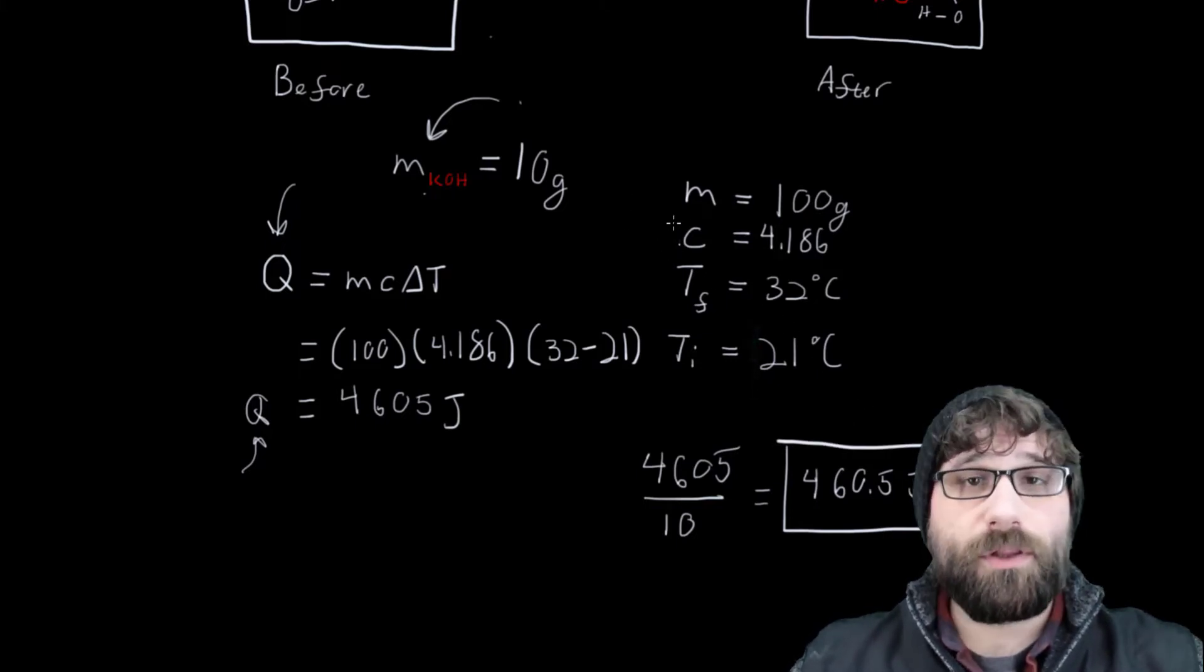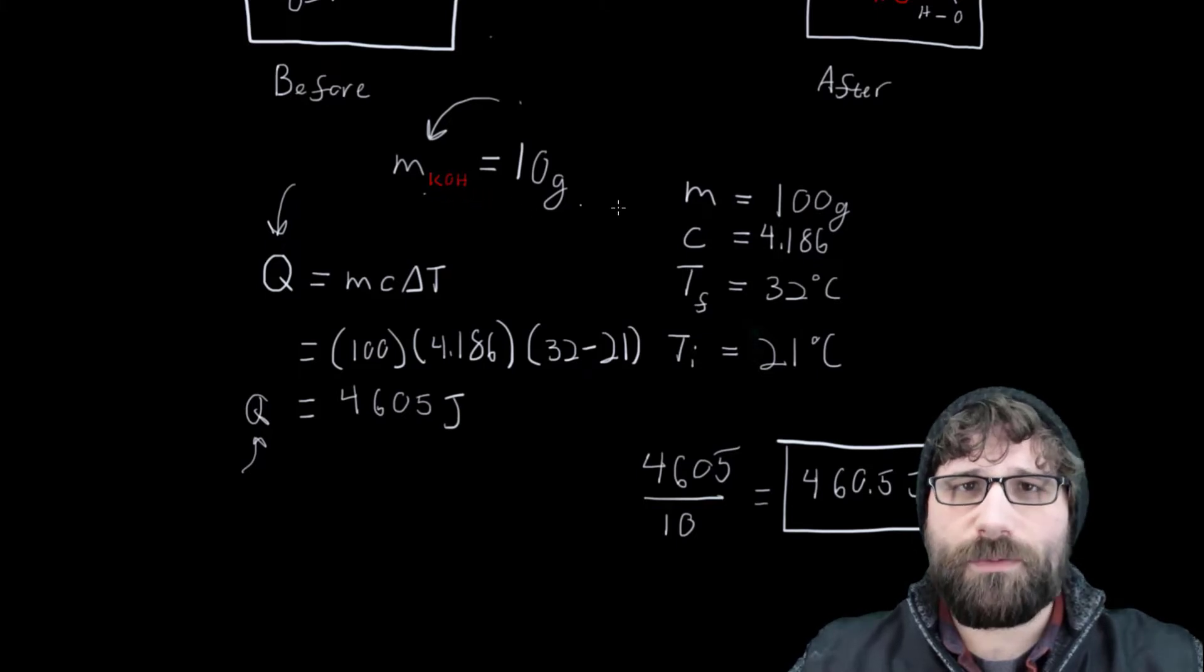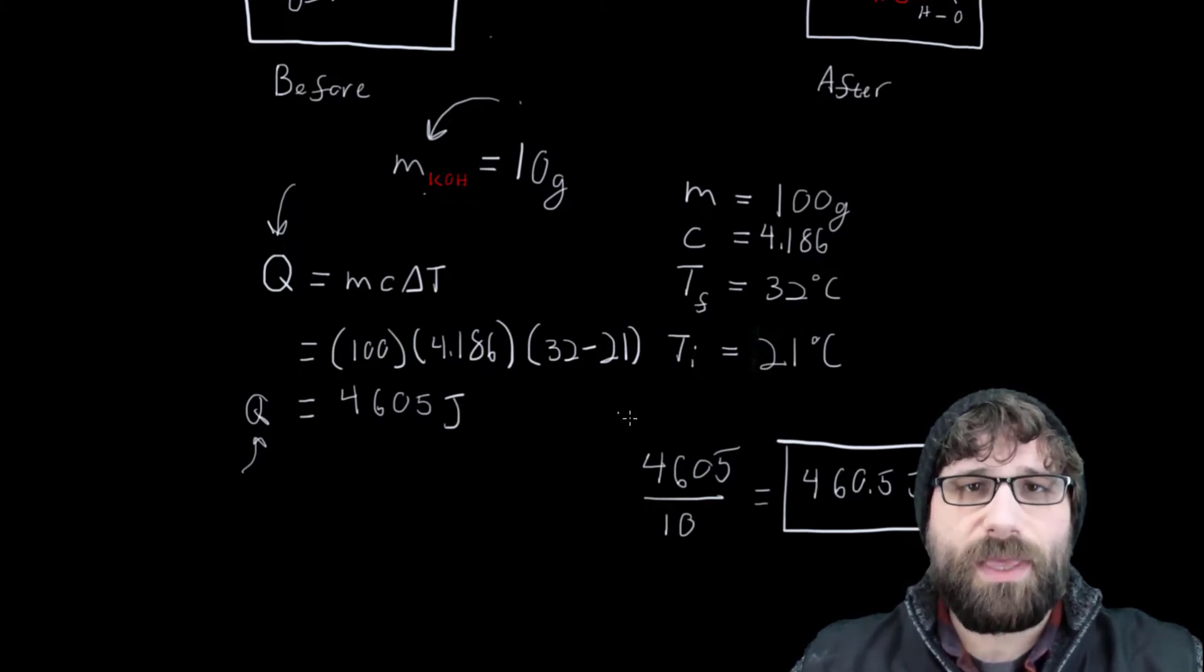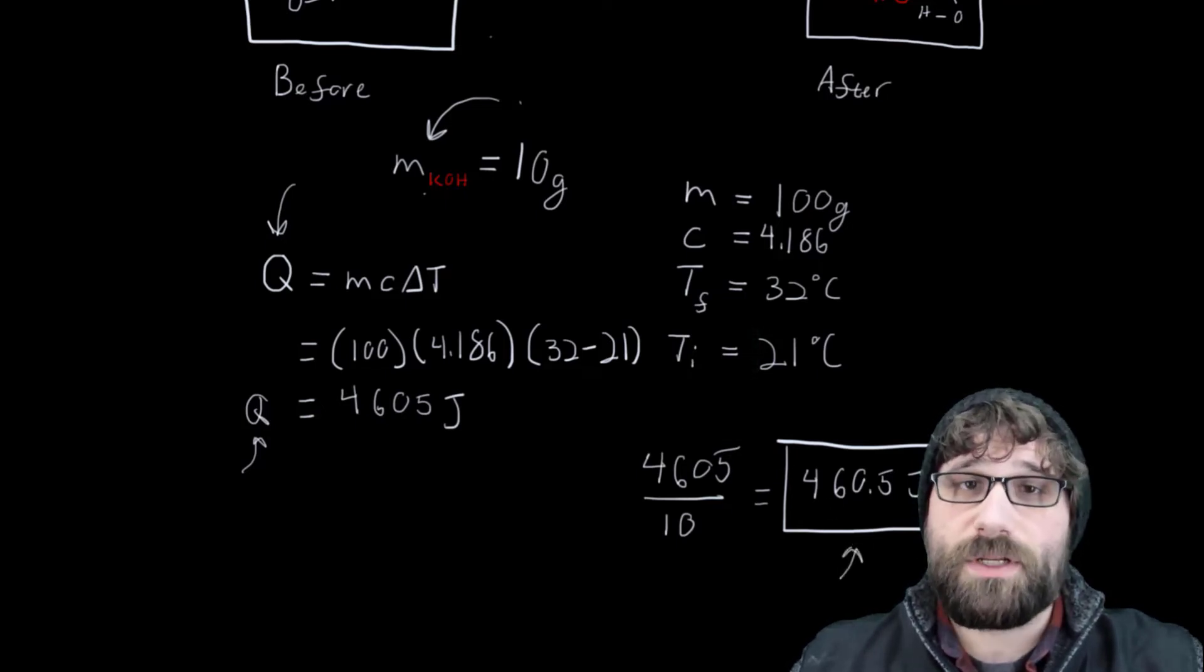So your numbers will look a little bit different. You won't be using potassium hydroxide. We'll use a different chemical. But you'll run through these exact same calculations and arrive at a number with joules per grams in its unit.